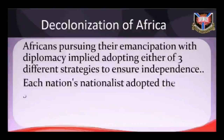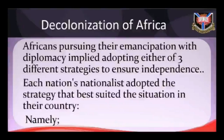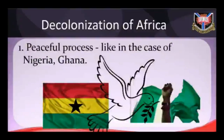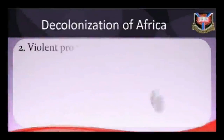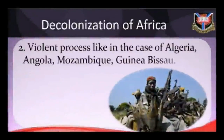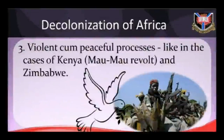Three different strategies of decolonization can be mentioned. Each nation's nationalists adopted the strategy that best suited their situation. One: peaceful process — involving peaceful constitutional conferences and negotiations, as in the case of Nigeria, Ghana, and so on. Two: violent process — involving armed liberation struggles, as in the case of Algeria, Angola, Mozambique, Guinea-Bissau, and so on. Three: mixed violent-peaceful process — involving both armed struggle and constitutional conferences, as in the cases of Kenya's Mau Mau revolt and Zimbabwe.